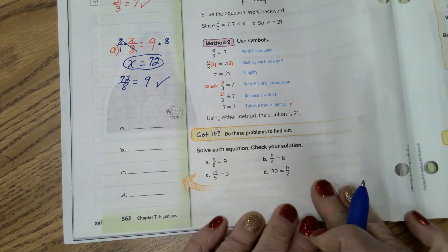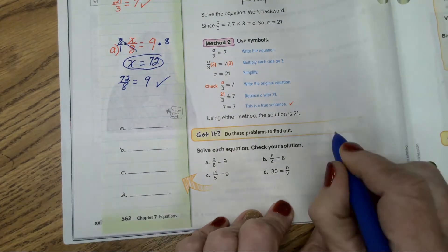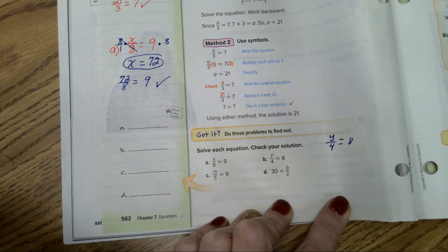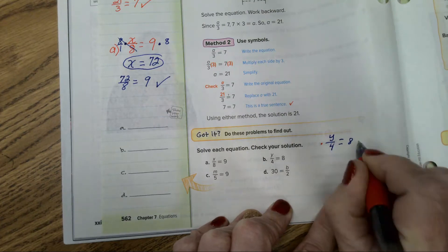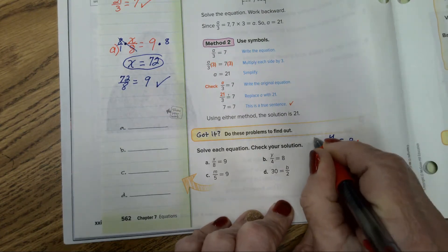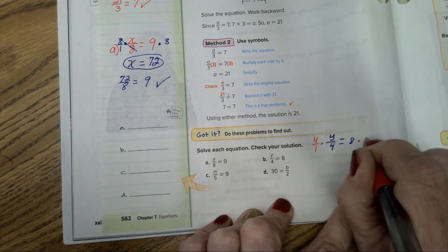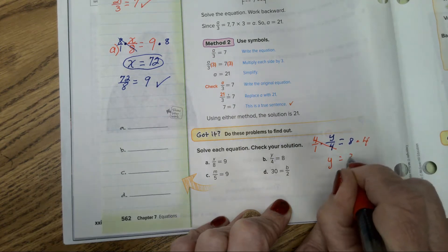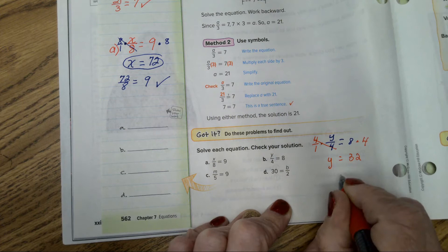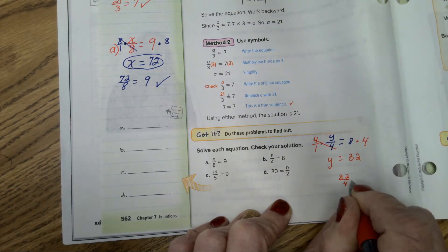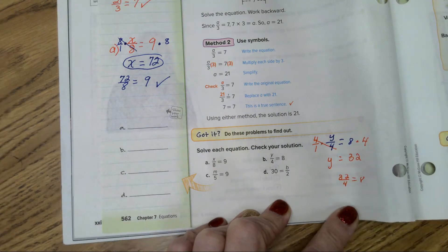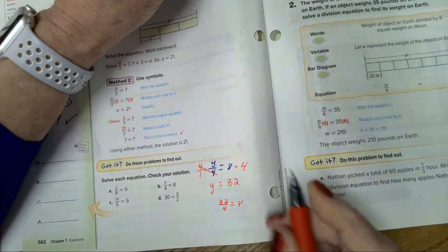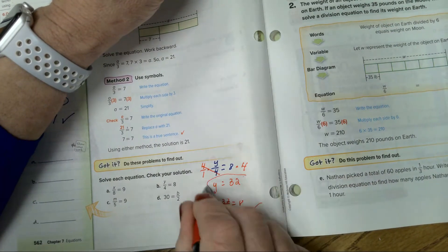Now let's do letter B. Y divided by 4 equals 8. To undo division, we're going to multiply both sides by 4. With a fraction, it's 4 over 1. This is not a fraction, so it can just be a 4. That cancels. You end up with Y equals 32. Check step: Does 32 divided by 4 equal 8? Sorry kids, I didn't realize you couldn't see that problem. Does 32 divided by 4 equal 8? Yes, it does.